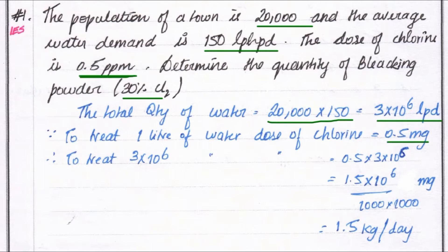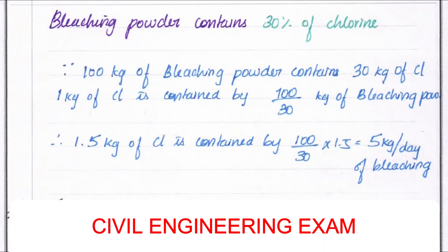To treat 3×10⁶ liters, the dosage of chlorine required is 0.5 into 3×10⁶, giving us 1.5×10⁶ milligrams. We now convert milligrams into kilograms: 1.5×10⁶ divided by 1000 (for grams) and divided by 1000 again (for kg), giving us 1.5 kg per day.